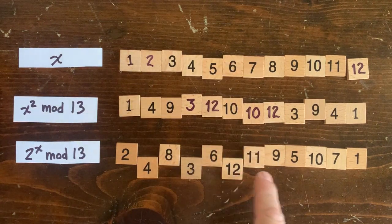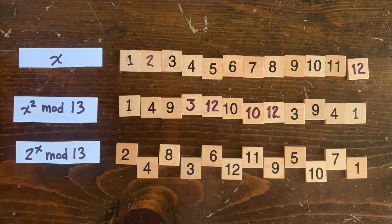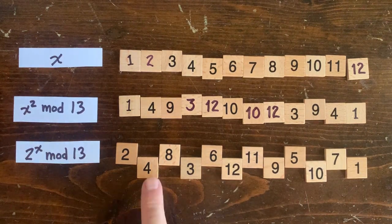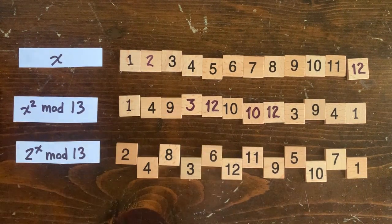And so every 2^x where x is even. So those are exactly the lucky numbers we see in the x squared remainder row.